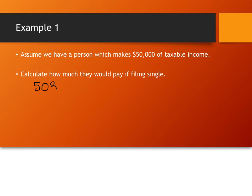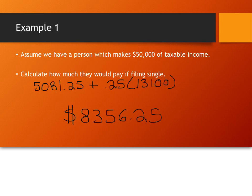You take the $50,000, you take the $5,081.25, plus 25% of their taxable income. Over $50,000, so I'm going to calculate that. Again, we are in the $36,900 bracket. So that is $13,100. You should remember that. And you end up with $8,356.25. Alright, so $8,356.25. We saw that earlier.